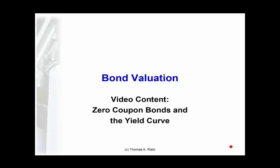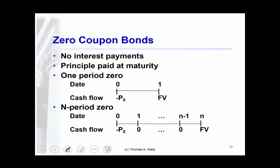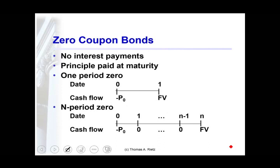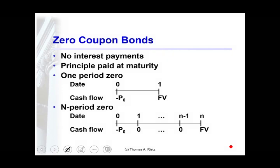This video covers zero-coupon bonds and the yield curve. Zero-coupon bonds are some of the most actively traded bonds in the market, especially treasury zero-coupon bonds that are created by stripping the principal payments from an individual treasury note or bond and trading those single cash flows in the secondary market.